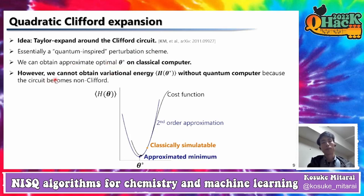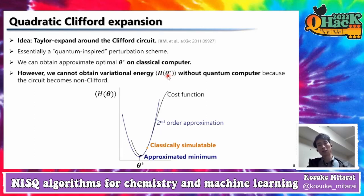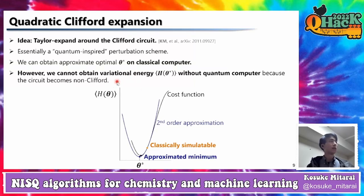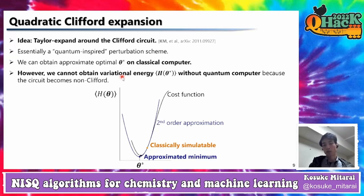However, we cannot obtain the variational energy at this parameter in general, because theta star does not correspond to a Clifford circuit. So we cannot simulate the circuit classically. We have to use a quantum computer to evaluate the final result — the Hamiltonian expectation at theta star. This is ideal for classical optimization of VQE: we can classically simulate the optimization process, but we use a quantum computer only to obtain the final energy.